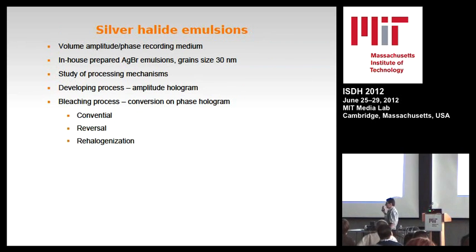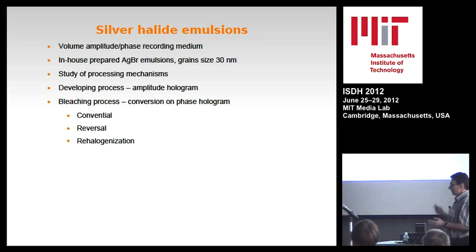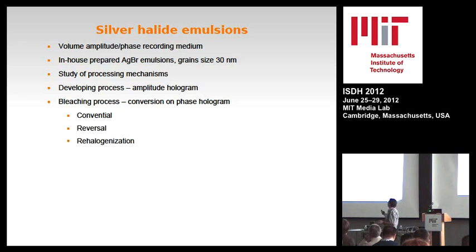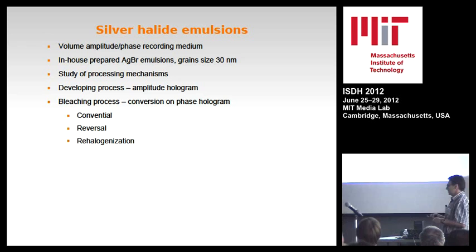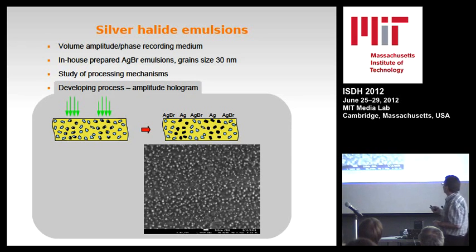Mass transport also occurs in silver halide emulsions when the reorganization process is applied. At our university, we use our own silver halide emulsions based on silver bromide grains with a size of about 30 nanometers. Some time ago, we studied the mechanism of formation of volume gratings in these media. I would like to show you the developing process and images from a scanning electron microscope of the exposed and developed layer.